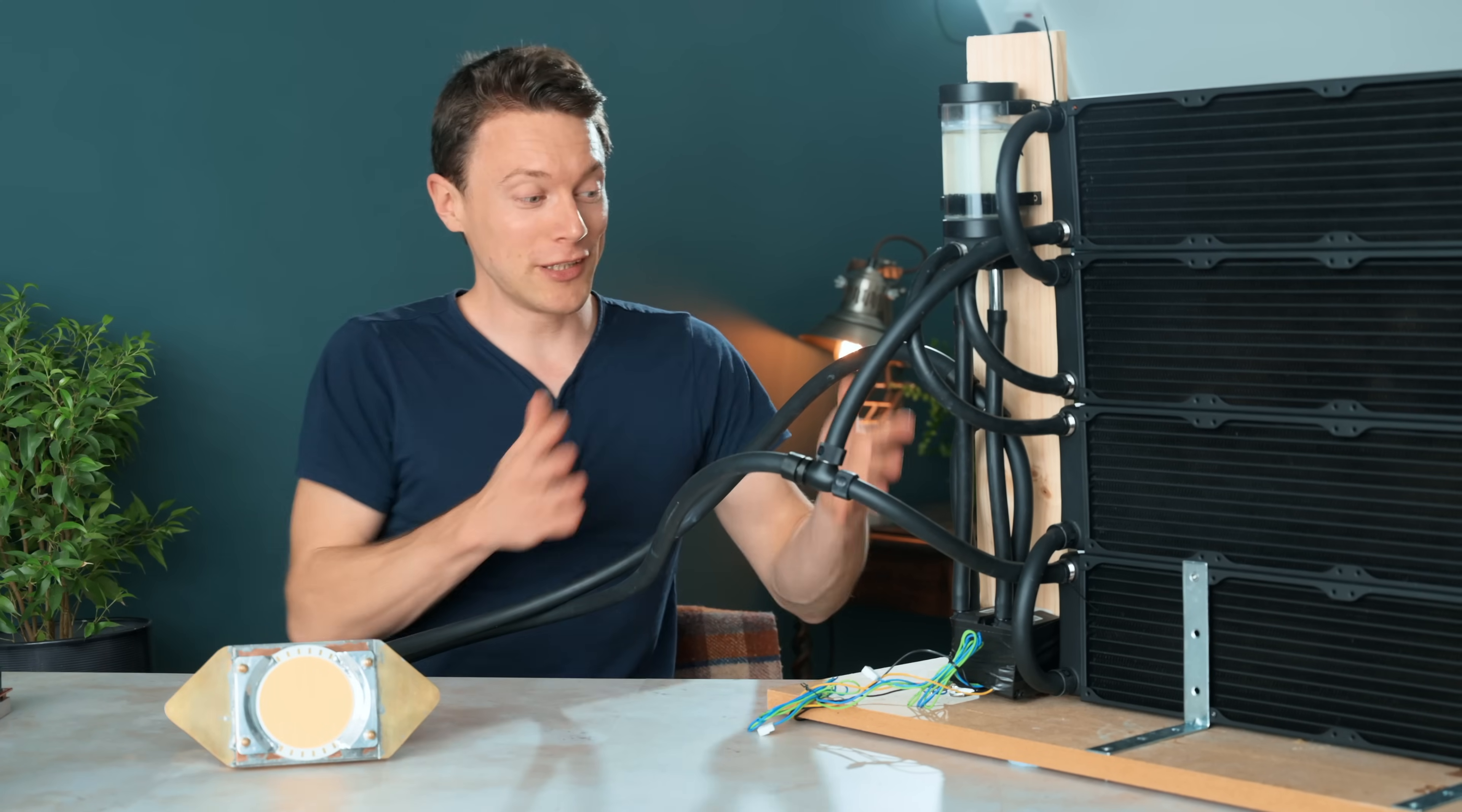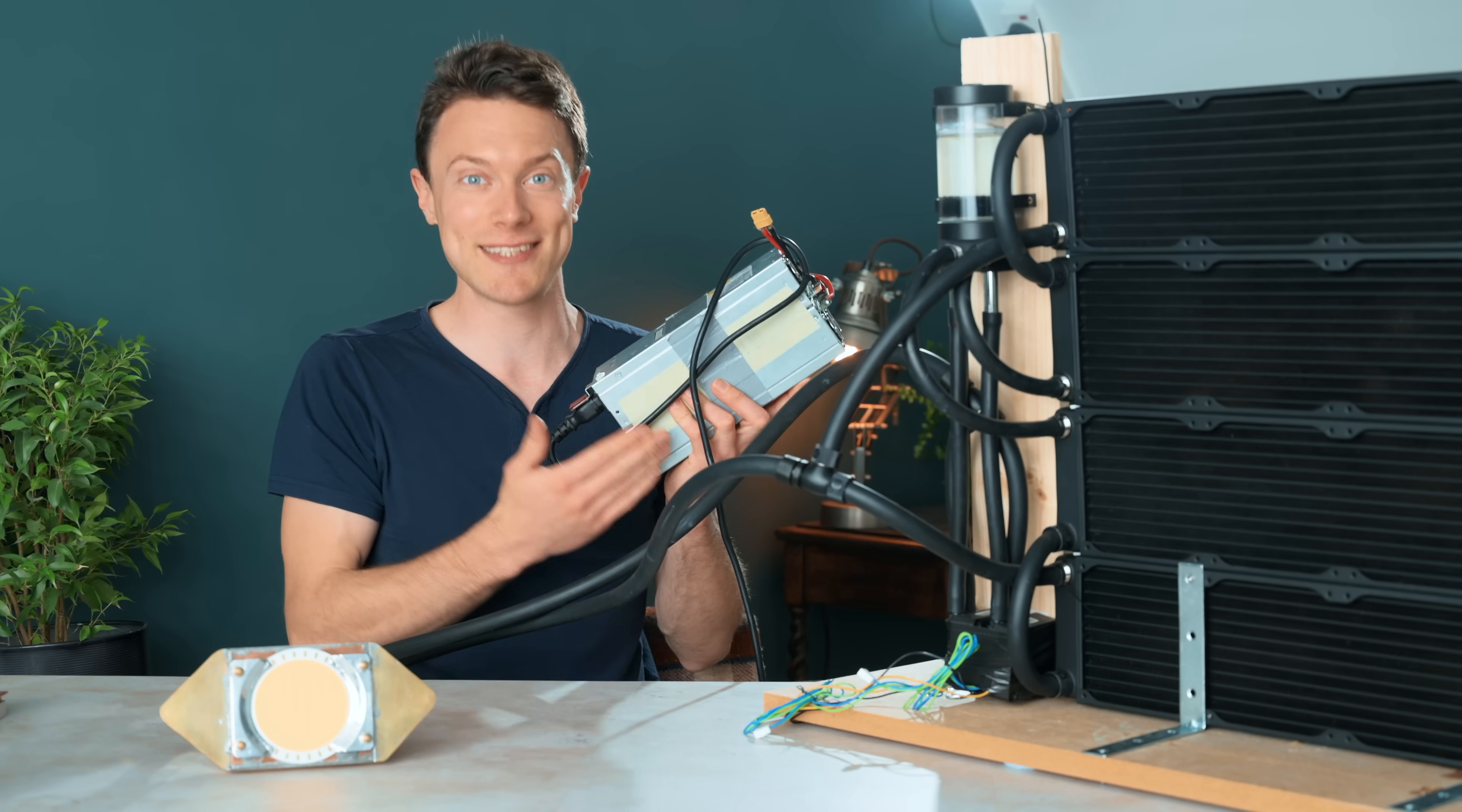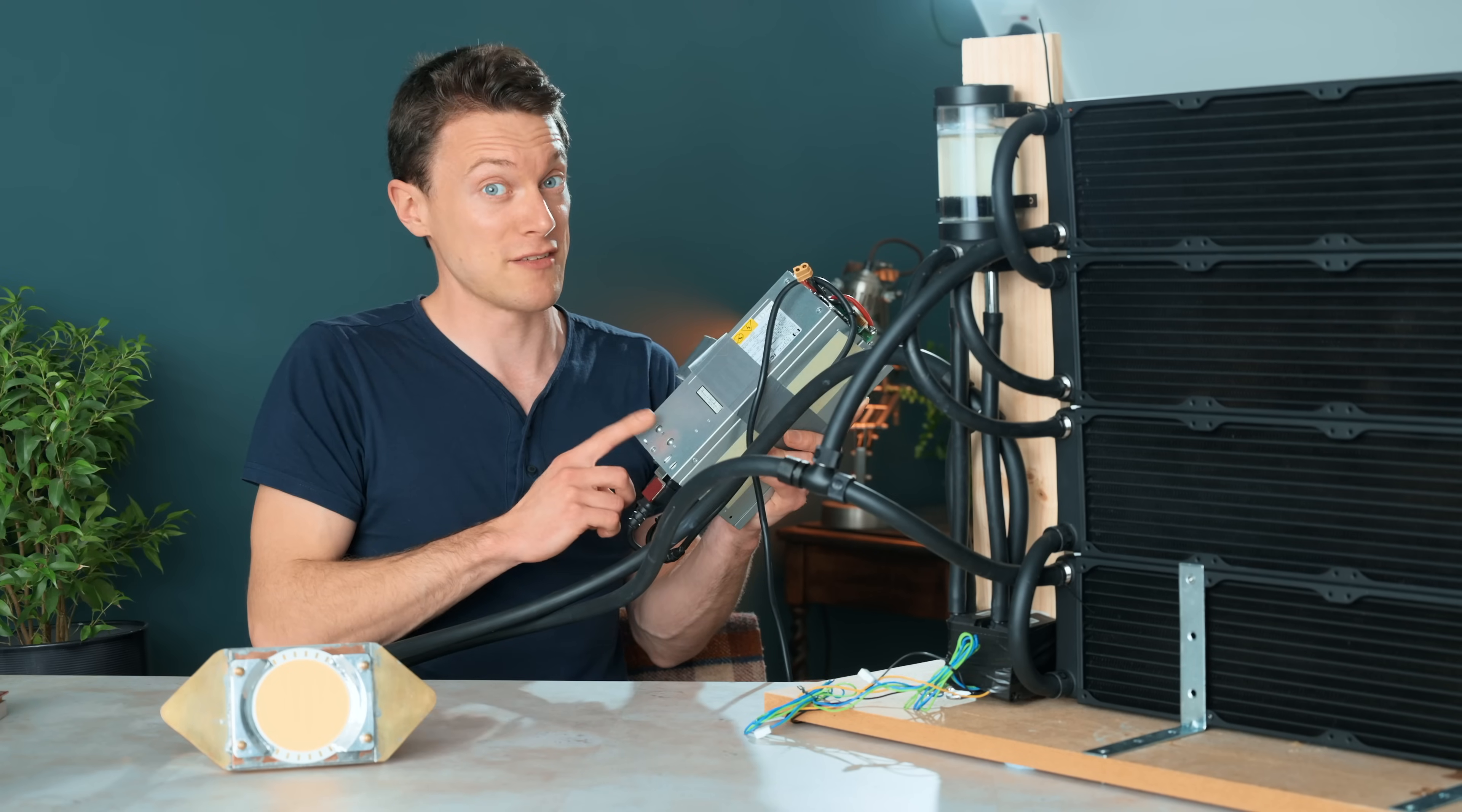With the cooling solution now sorted it's time to move on to the next challenge in this build which is actually going to be delivering power to the LED. I am going to be powering this from the mains for which I have got a set of server power supplies that have been wired up in series to give me 2000 watts at 24 volts. This has got plenty of wattage at 2000 watts that's plenty for the LED but the voltage isn't quite there as the LED needs about 30 volts and this can only deliver 24.